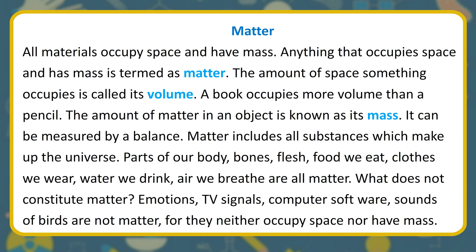All materials occupy space and have mass. Anything that occupies space and has mass is termed as matter. The amount of space something occupies is called its volume. A book occupies more volume than a pencil. The amount of matter in an object is known as its mass, and it can be measured by a balance.